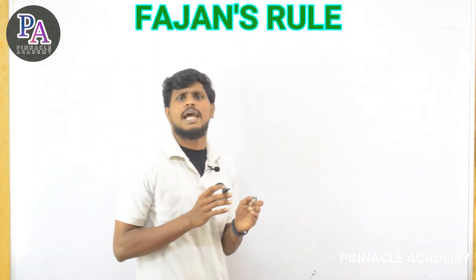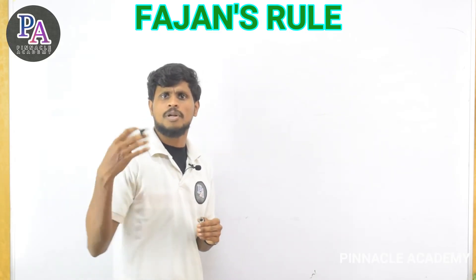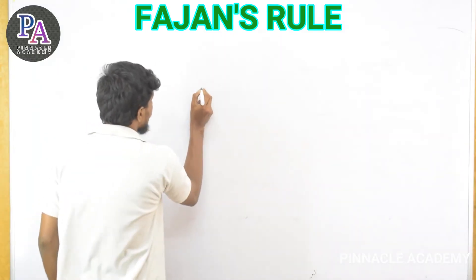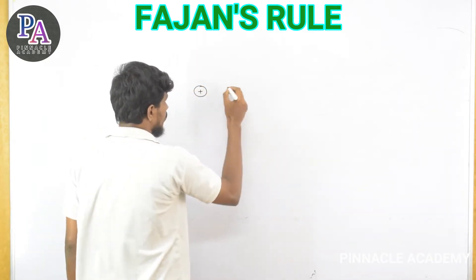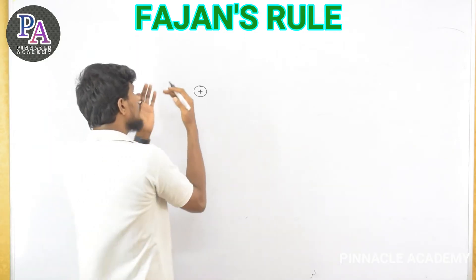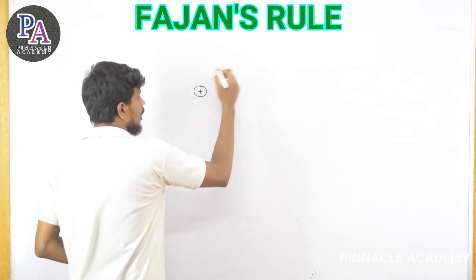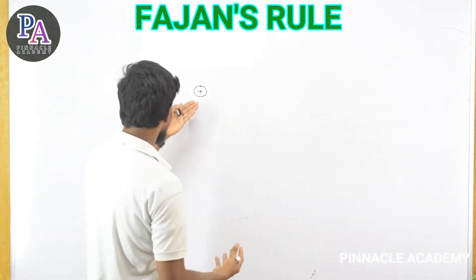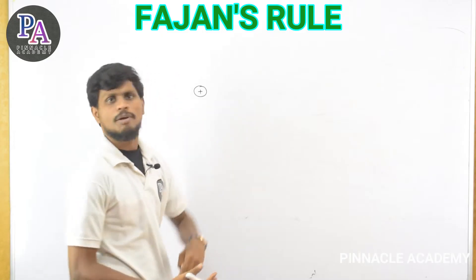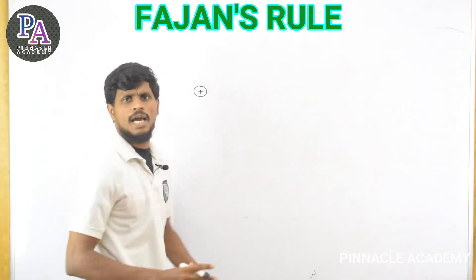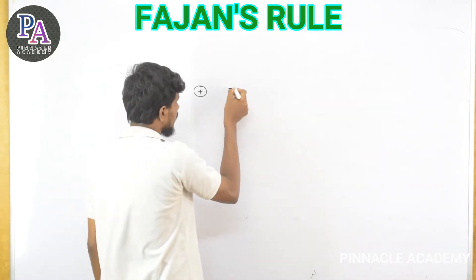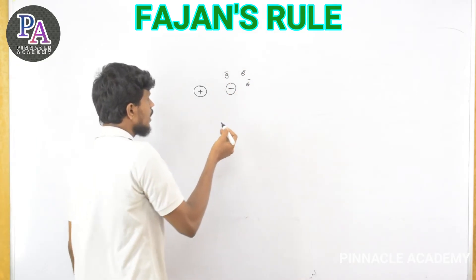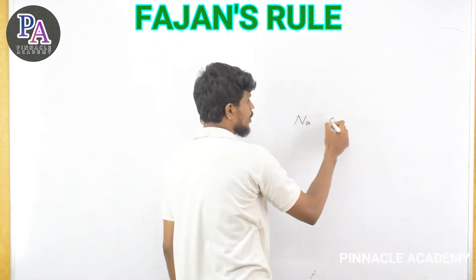If I have an ionic bond, there is a positive ion and a negative ion. The negative ion has an electron cloud around it. The positive cation attracts the electron cloud of the negative anion, pulling it toward itself — this is the basis of polarization in Fajans Rule.